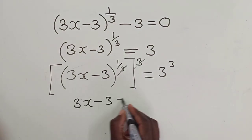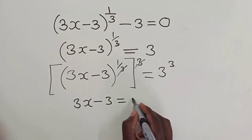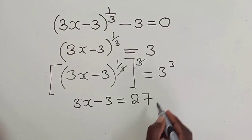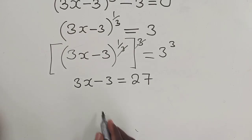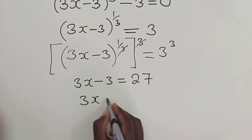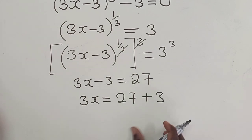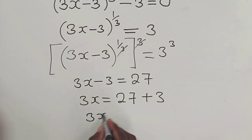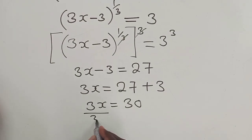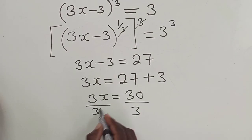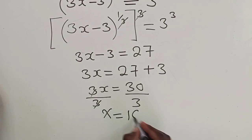Okay, so the next thing will be to group the like terms. So 3X is equal to 27 plus 3, of which you just get 30 this side. Divide by 3 by 3, our X will be equal to 10.